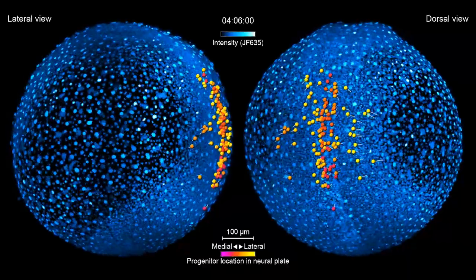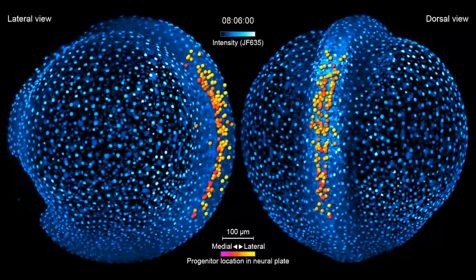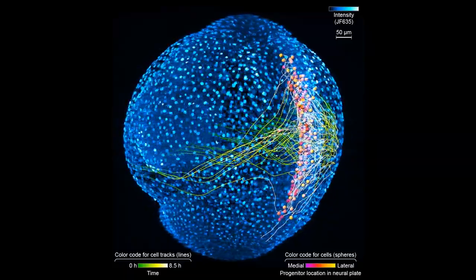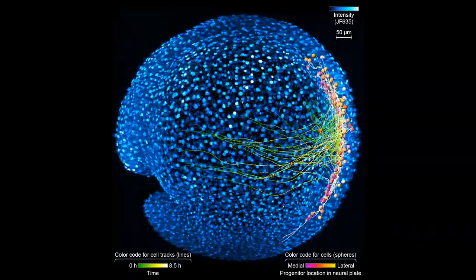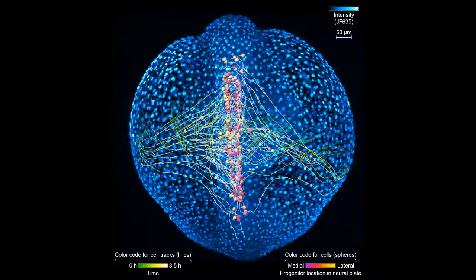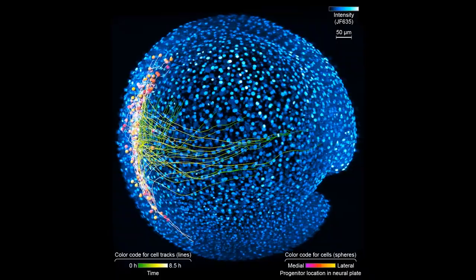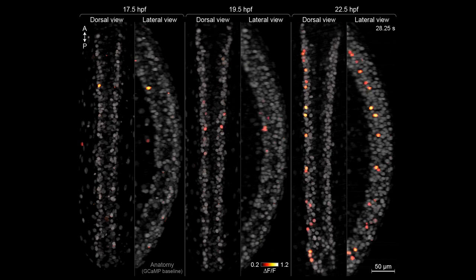We first imaged the development of the entire zebrafish embryo at the single cell level until 17 hours post-fertilization. Using these images, we tracked the neural progenitor cells as they form the spinal cord. As soon as these progenitor cells start to differentiate into neurons, we rapidly switched to high-speed functional imaging of the spinal cord in order to record the neuron's activity.